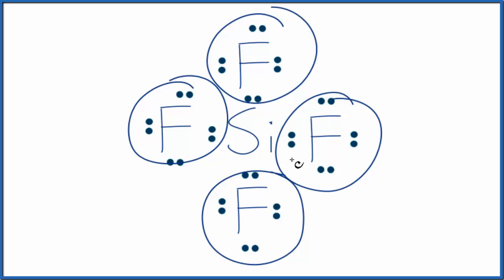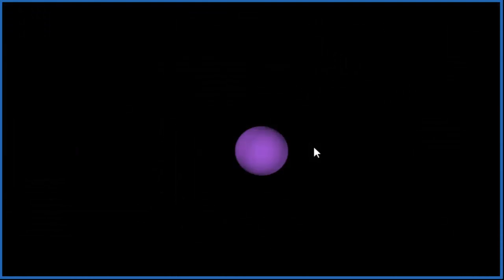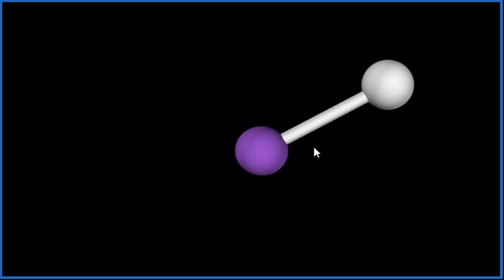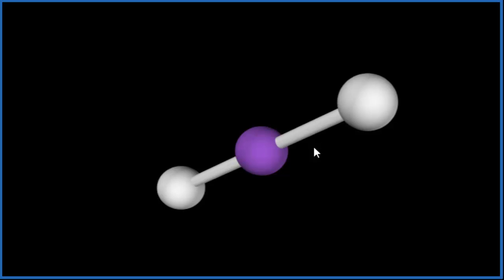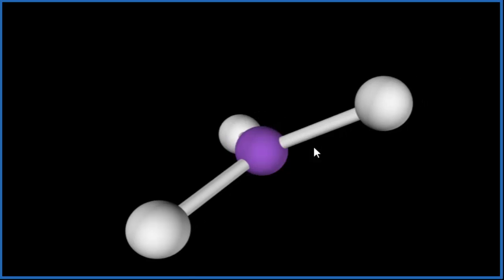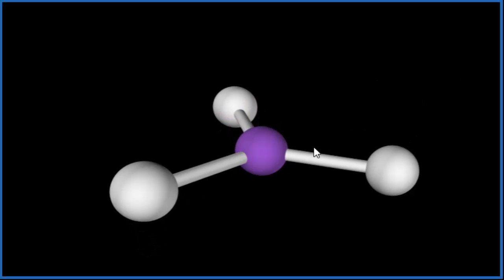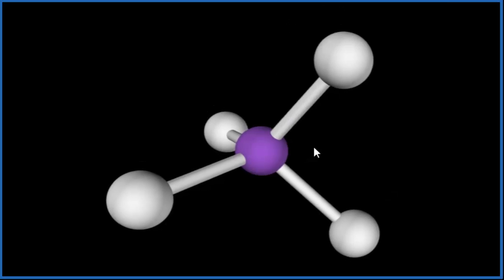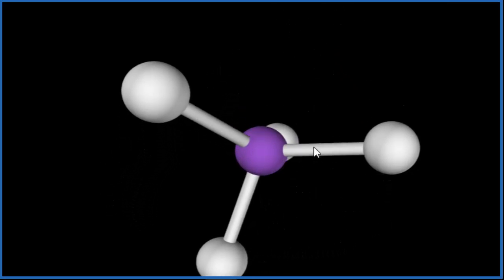It helps if you visualize this. The purple is our central Si atom. We're going to add those four fluorines on. We had one, two, and you can see they've spread out to be as far away from each other as they can. Let's add a third one, spread out again into this trigonal planar molecular geometry. And the fourth one gives us a tetrahedral molecular geometry.